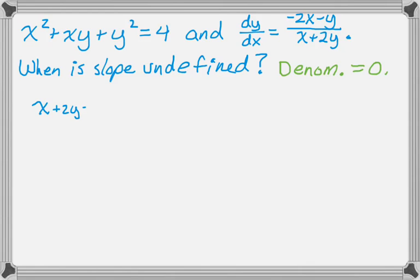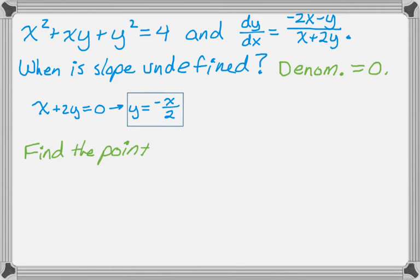So I need the denominator to equal 0 if the slope is going to be undefined. So let's start with that. We have x plus 2y equals 0. This will give us our relationship between x and y when the slope is undefined. I'll do pretty much the same thing. I'm going to go back to the original and substitute for y.